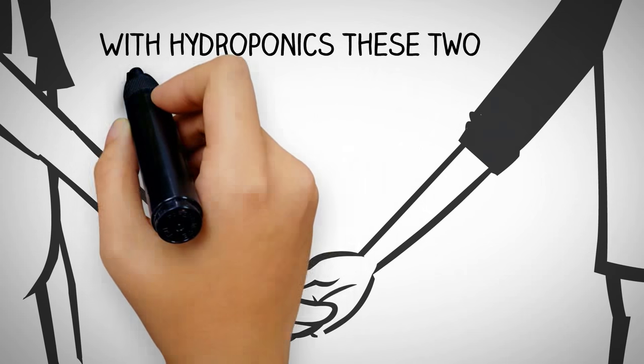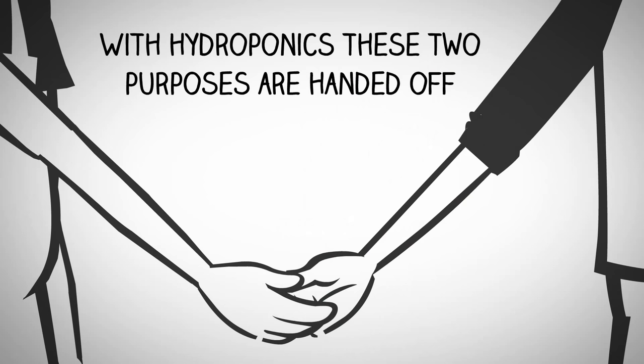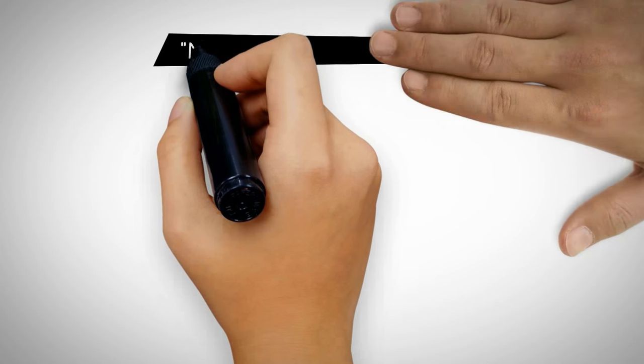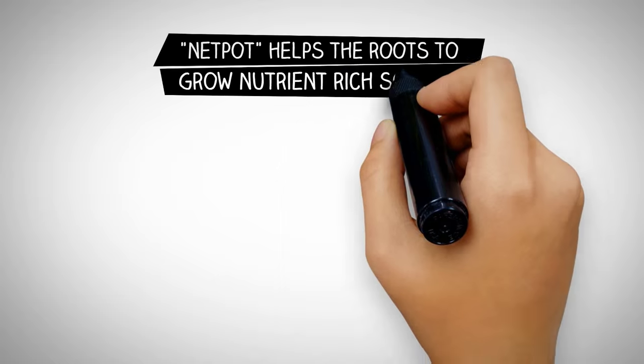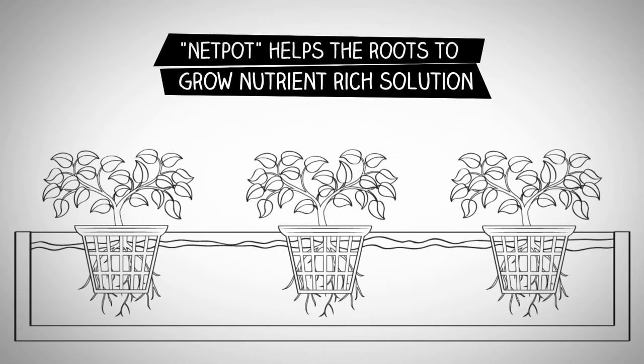With hydroponics, these two purposes are handed off. The plant is supported by a net pot which allows the roots to grow through into a nutrient-rich solution below.